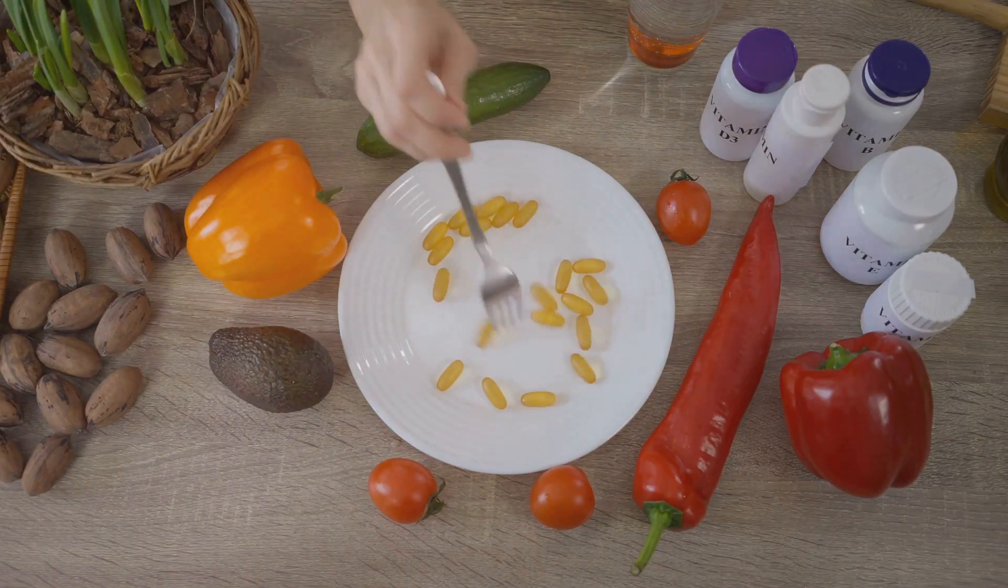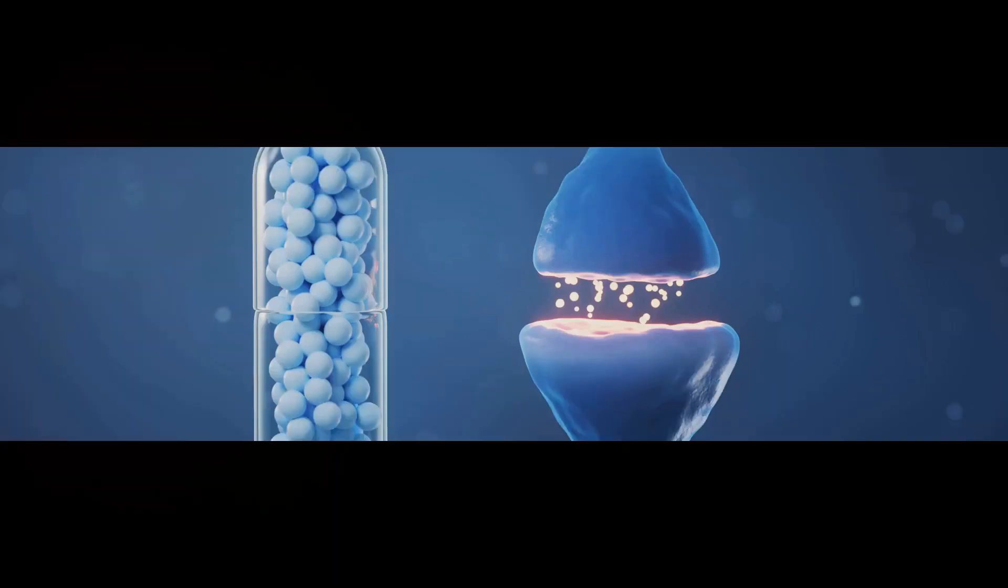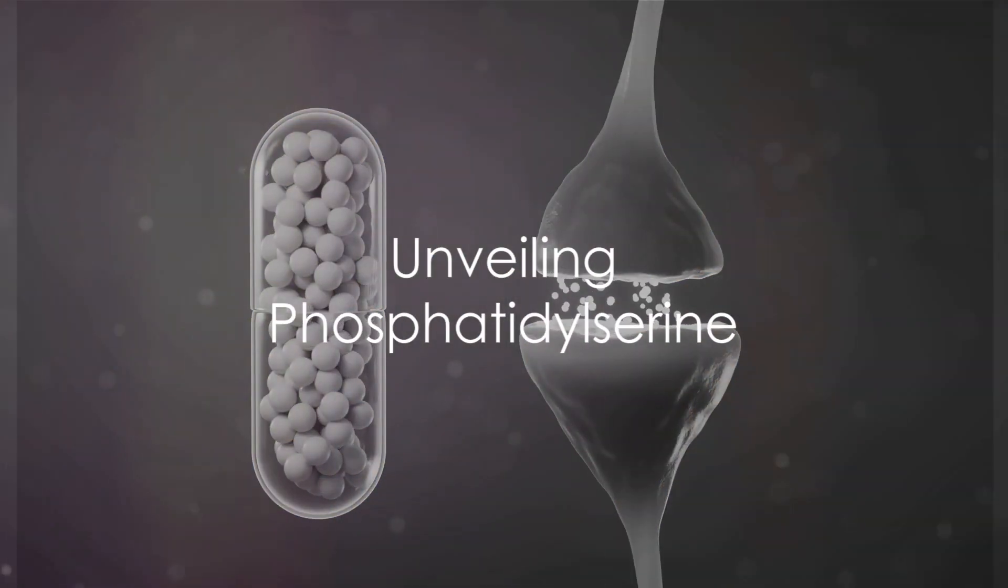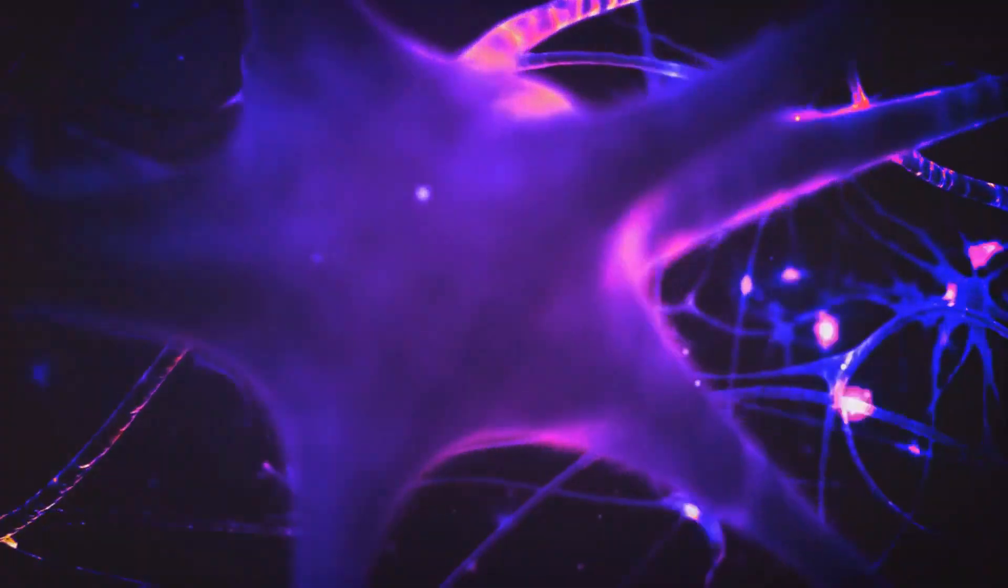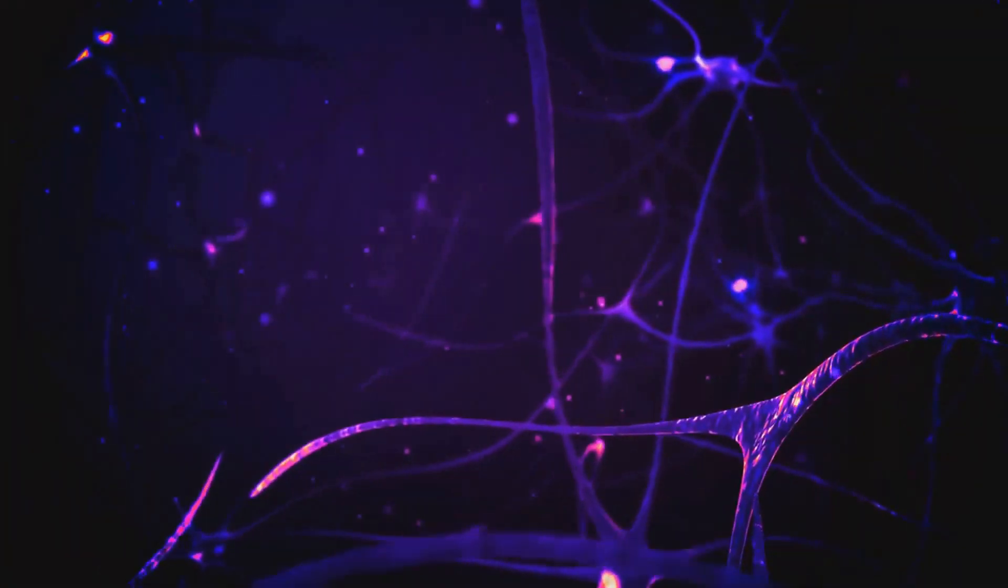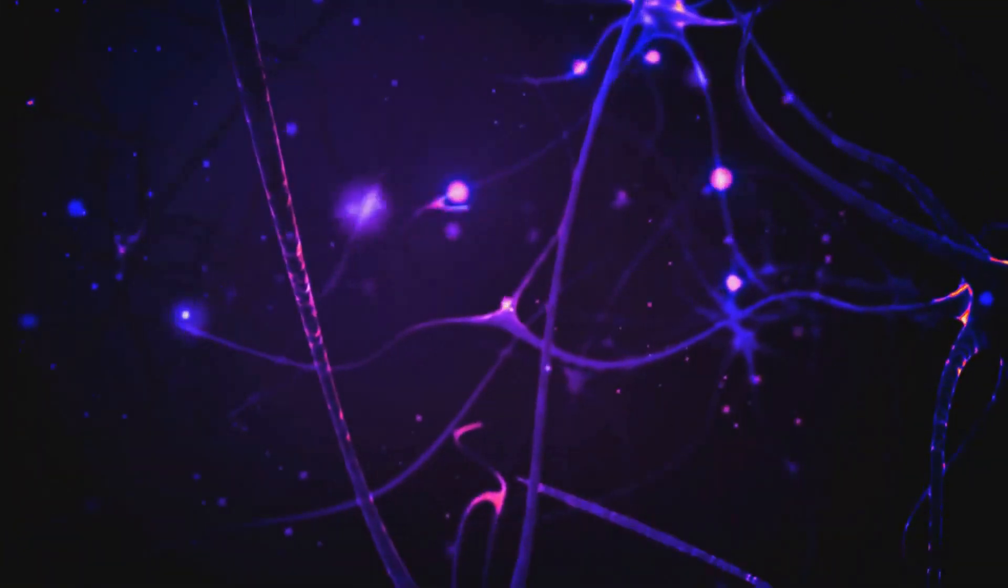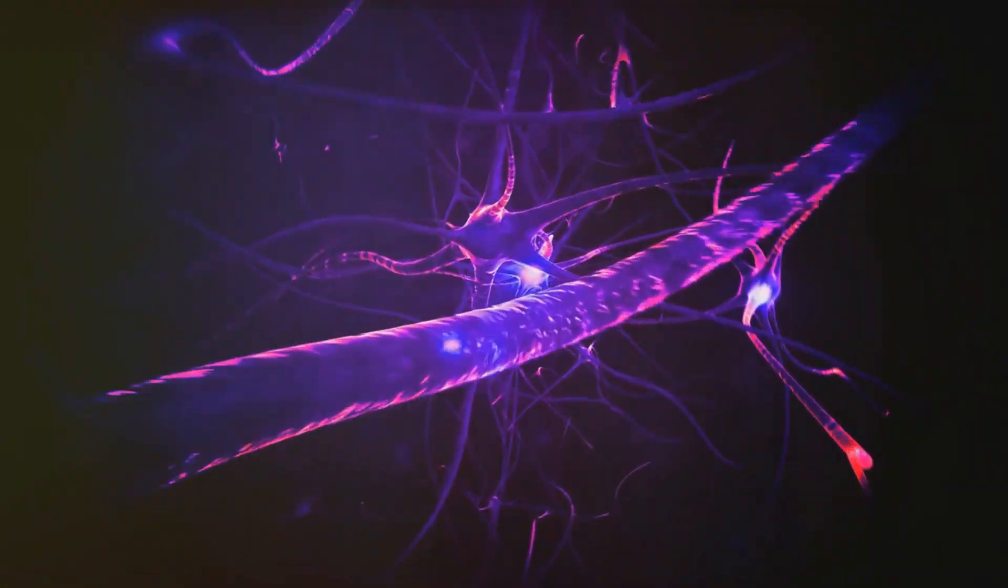But what if there's a nutritional element that could potentially help? Meet phosphatidylserine, a phospholipid that's part of every cell in your body. This little powerhouse plays a crucial role in cell signaling and apoptosis. That's a fancy way of saying it helps cells communicate and self-destruct when necessary.